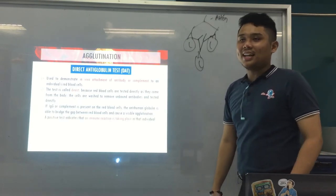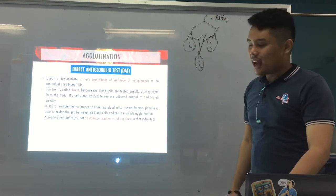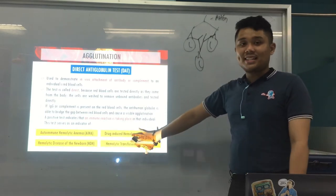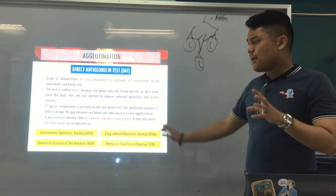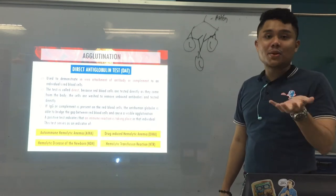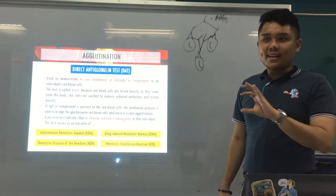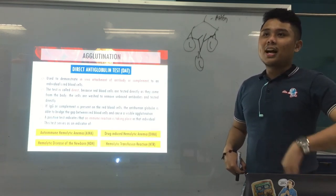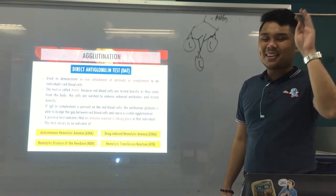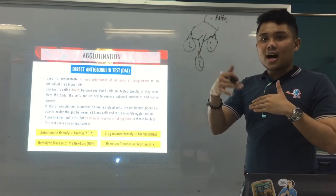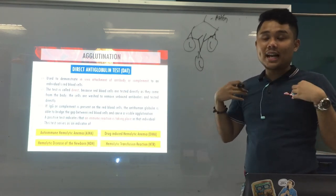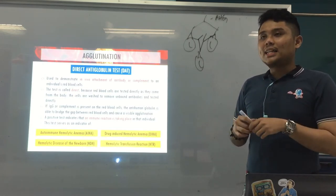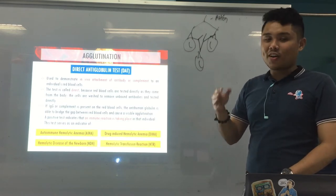A positive reaction indicates that there is an immune reaction taking place in the individual, and it serves as an indicator of certain diseases. In these diseases, your RBCs could be coated with antibodies, which can lead to hemolysis — the RBCs could be destroyed by macrophages or by the antibodies themselves, which could lead to death.